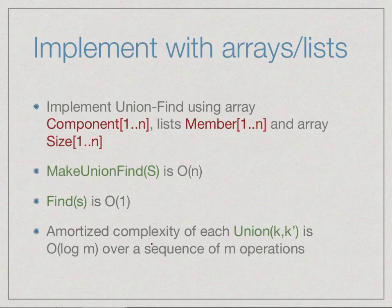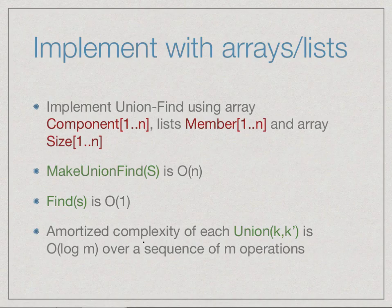The array-based implementation uses an array called 'component' to tell us which component each element belongs to. It keeps an array of lists to tell us which elements belong to each component — a reverse mapping. It also keeps track of the size of each component because we merged components by relabeling smaller ones with the names of bigger ones. So make-union-find was O(n), find was O(1), and the amortized complexity of union was O(log m) for a sequence of m operations.